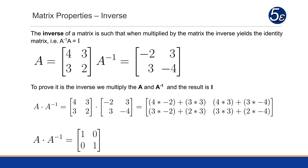A times the inverse matrix equals a matrix multiplication: 4 times negative 2 plus 3 times 3, and then 4 times 3 plus 3 times negative 4. Then on the second row, 3 times negative 2 plus 2 times 3, and then 3 times 3 plus 2 times negative 4. And when we do this, we end up with the identity matrix.